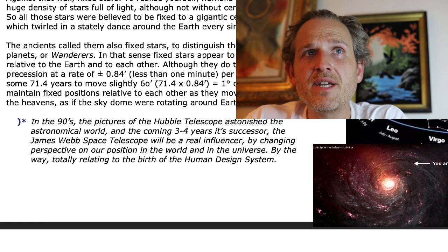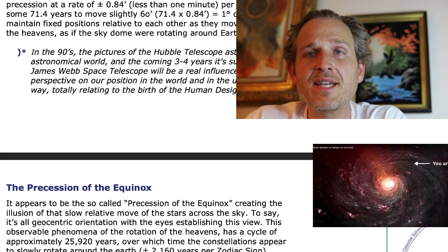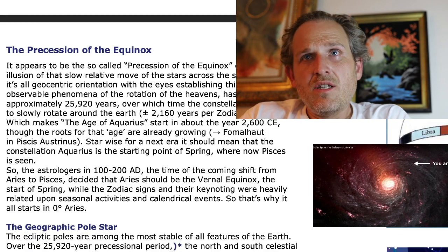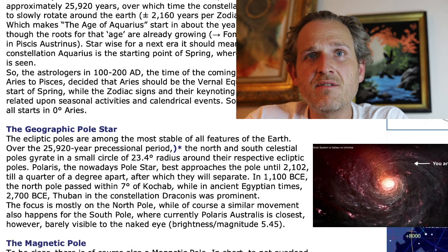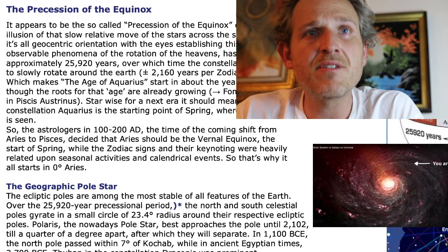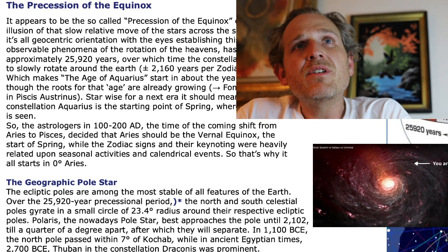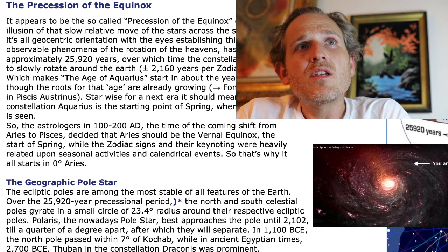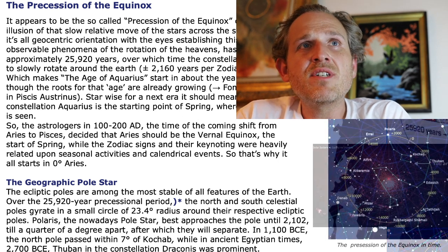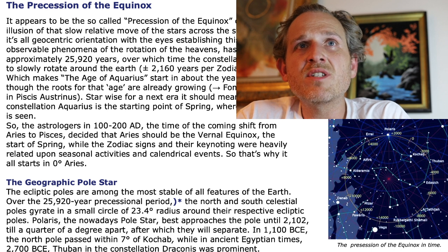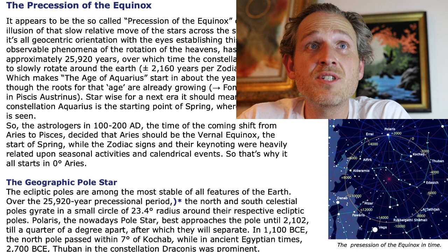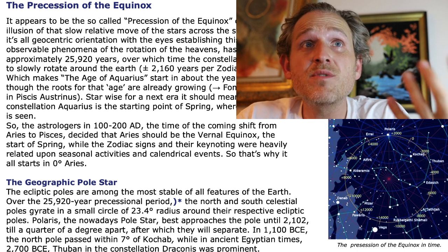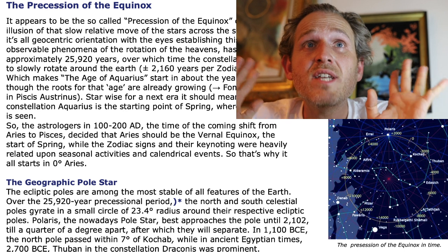That's absolutely right. It's a very interesting thing. He has some images which are on rotation in the bottom right-hand corner — the precession of the equinox. It appears to be the so-called precession of the equinox, creating the illusion of that slow relative move of the stars across the sky. To say it all: it is a geocentric orientation with the eyes establishing this view — this observable phenomena of the rotation of the heavens.